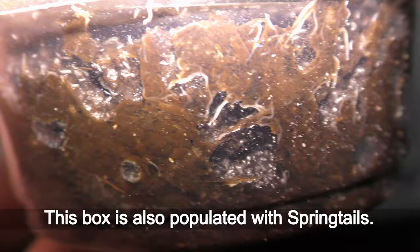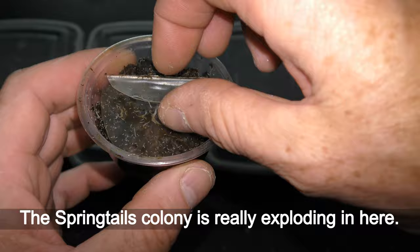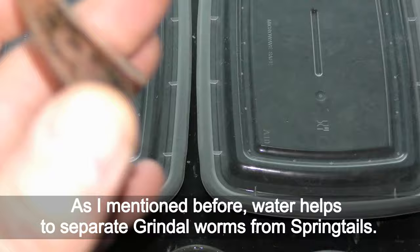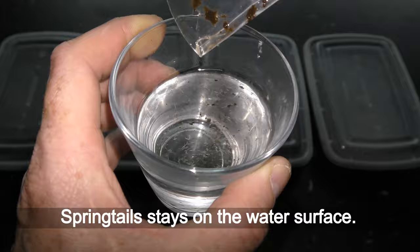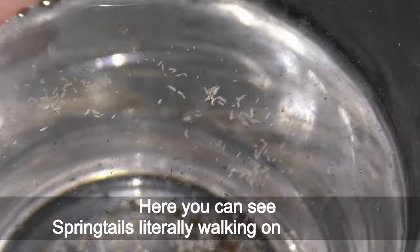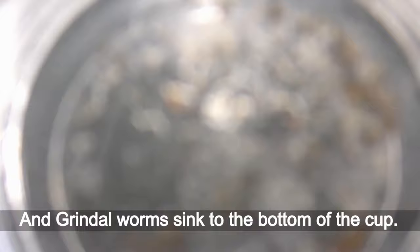This box is also populated with springtails. The springtails colony is really exploding in here. As I mentioned before, water helps to separate grindal worms from springtails. Springtails stay on the water surface. Here you can see springtails literally walking on the water, and grindal worms sink to the bottom of the cup.